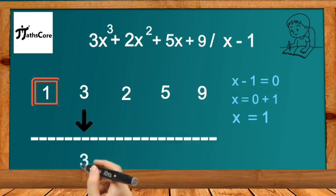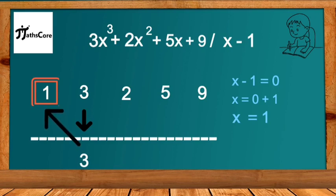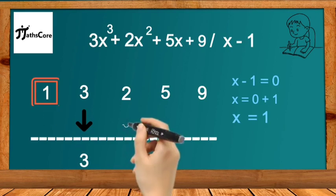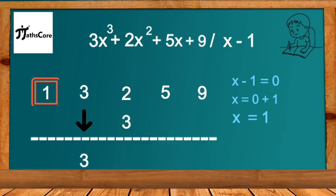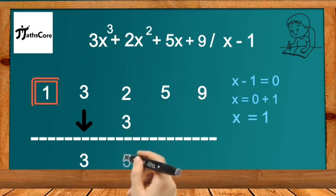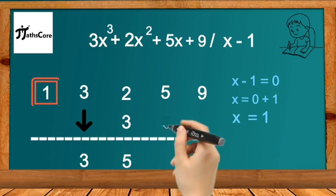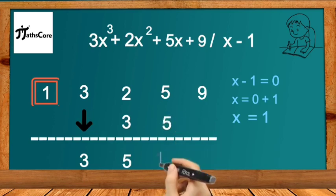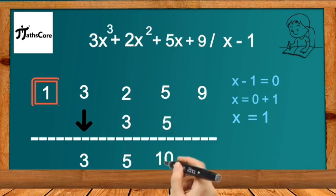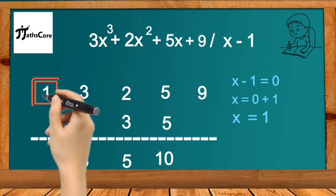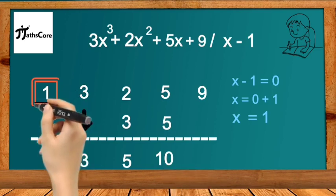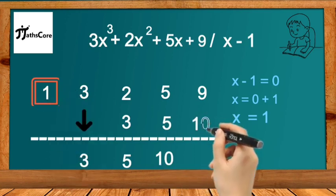Take the first coefficient 3 as it is at the bottom and multiply it with 1: 3 × 1 = 3. Add this 3 to 2: 2 + 3 = 5. Multiply this 5 with 1: 5 × 1 = 5. Add this 5 to the next 5: 5 + 5 = 10. Multiply this 10 with 1: 10 × 1 = 10. Add 10 to 9 and we get 19.